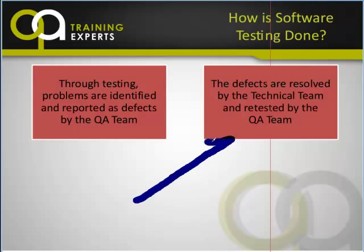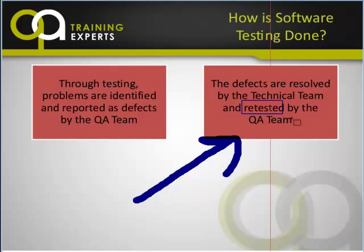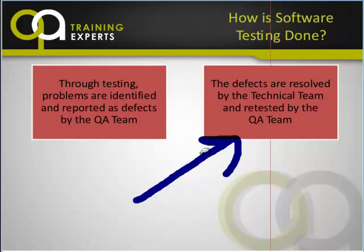The defects that we find are resolved by the technical team, and then they come back to us. The technical team says they fixed the defect. What do we do? We do the logical thing — we retest it again to make sure they really did fix it. We don't just take their word for it.